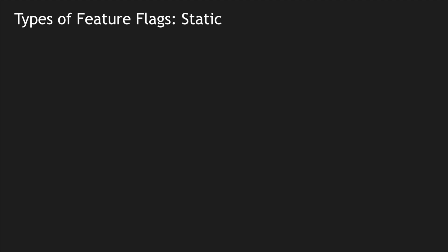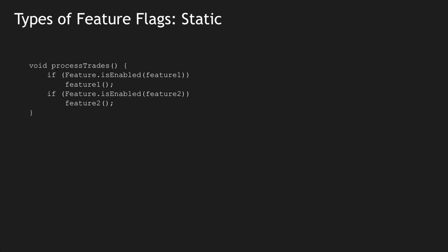At a high level, there are two types of feature flags: static and dynamic. There's also something called customer-specific, which is a flavor of dynamic. Static feature flags are controlled by configurations present in a specific environment or deployment. For example, in a 'process trades' method, I check if a feature is enabled using a configuration file — say a dev.yaml — where feature 1 is true and feature 2 is true in dev.